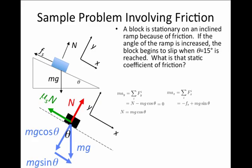In the x direction, there are two forces again. There's mu s times the normal force in the static force of friction in the negative x direction. And gravity has a component in the positive x direction, that component being mg times sine of theta.